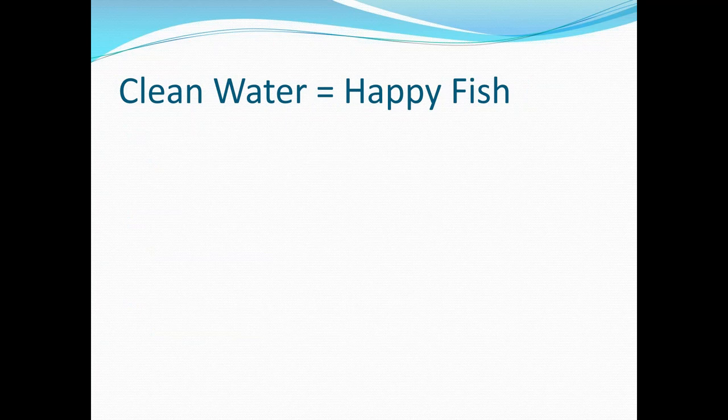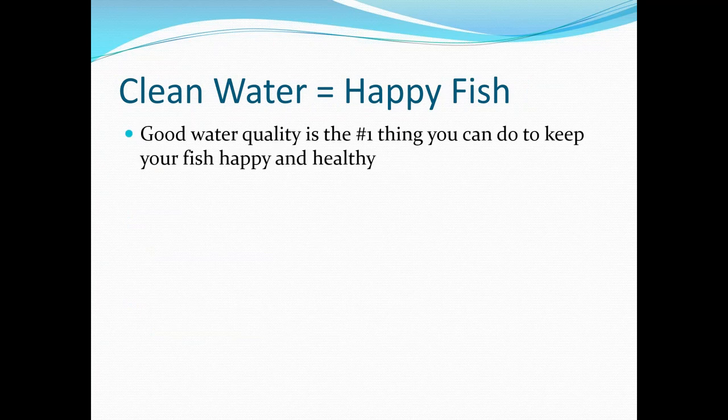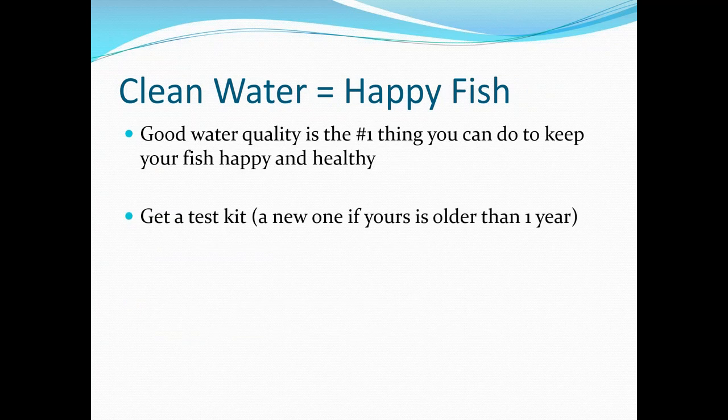In conclusion, clean water equals happy fish. Good water quality is the number one thing you can do to keep your fish happy and healthy. You want to get a test kit, and if yours is older than one year old, get a new one — expiration dates on test kits are only valid if you haven't opened the kit, mostly just there for shopkeepers to rotate stock. Test regularly; water systems with fish need to be tested on a regular basis. At least once a month is great for any fish system.